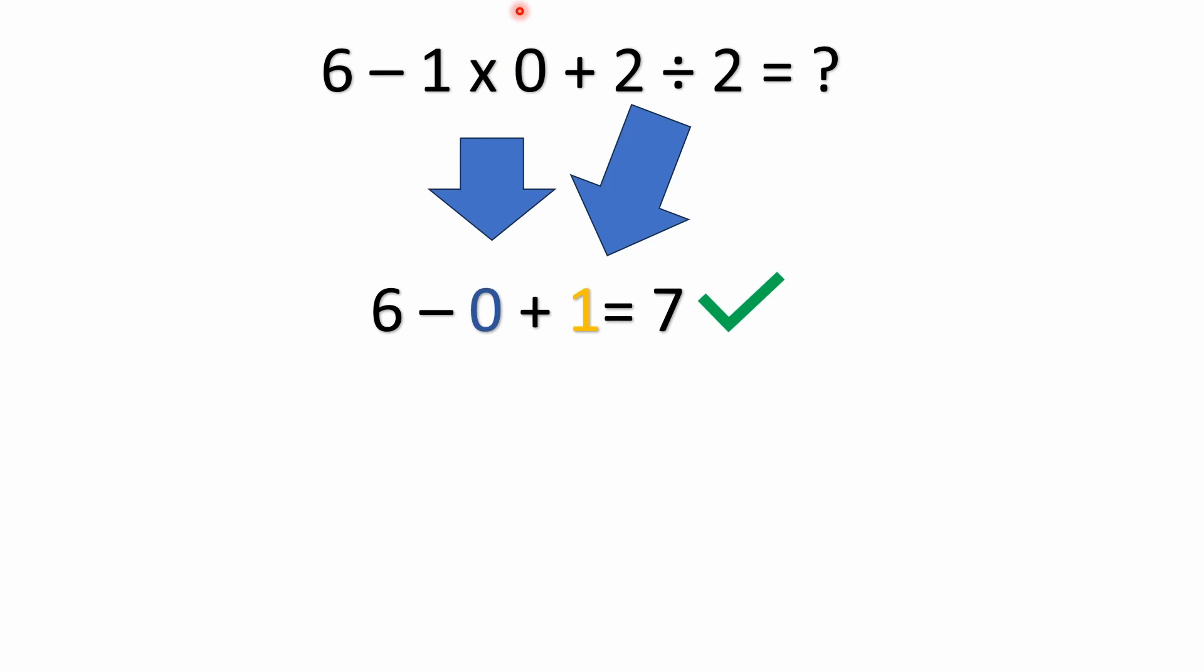So in this problem here, we've got multiplication and then we have division. So first thing we're going to do is take 1 times 0, and that gives us 0, which we're going to bring that down here. 2 divided by 2 is simply 1. So we have a 1 here. I've got it here in yellow to highlight it.